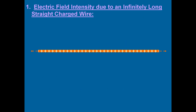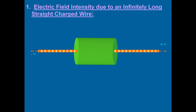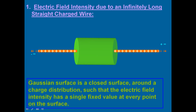Now let us see how to find the electric field intensity due to an infinitely long straight charged wire. We consider an infinitely long straight wire given a positive charge. In order to apply Gauss's theorem, we have to consider a Gaussian surface — a closed surface around a charge distribution such that the electric field intensity has a single fixed value at every point on the surface. The most suitable shape of Gaussian surface here will be a cylinder, with the straight conductor passing through the axis of the cylinder.